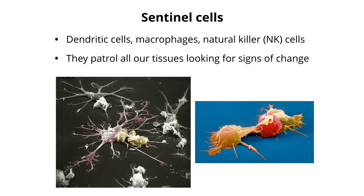We've talked about soluble mediators of the innate immune response—interferons and cytokines. Now let's talk about the sentinel cells: dendritic cells, macrophages, and natural killer cells. Dendritic cells—named for their projections resembling neuronal dendrites, discovered in New York City—and NK cells are always patrolling your tissues: underneath your skin, on mucosal surfaces, below the epithelial sheet, and in body cavities. Their job is to look for trouble; for example, in the gut at M cells, they constantly sample antigens to see if anything foreign is present.